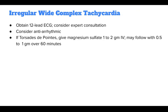For regular wide complex tachycardia, obtain a 12-lead ECG and consider expert consultation. Consider an antiarrhythmic. If it is Torsades de Pointes, give magnesium sulfate 1–2 gm IV, and may follow with 0.5–1 gm over 60 minutes.